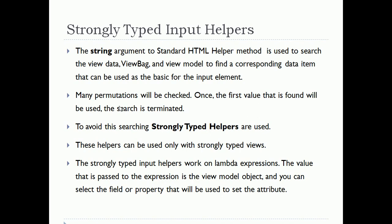There will be many permutations — it will first check ViewData, then ViewBag, then your model properties — so it will be time consuming. Once it finds the value, the search is terminated. To avoid this overhead, strongly typed HTML helpers are used.